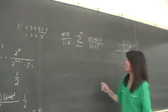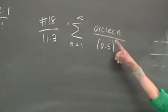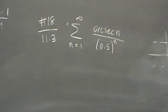Okay, number 18, section 11.3. We have this series where the nth term is arc secant n over 0.5 to the n.